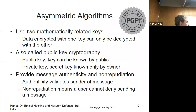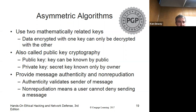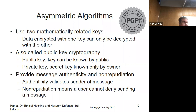Asymmetric algorithms — I put a picture of PGP there, which is one of the most popular. Data is encrypted with one key and can only be decrypted with the other. With symmetric, you use the same key to encrypt and decrypt. With asymmetric, you use a different key — you encrypt with one and decrypt with a different one. You can go to keyserver.pgp.com and publish your public key. If Quinn wanted to send me something, he could download my public key, encrypt the message with it, and I'd be the only one who could decrypt it with my private key.